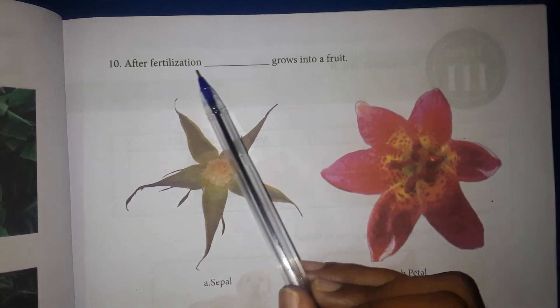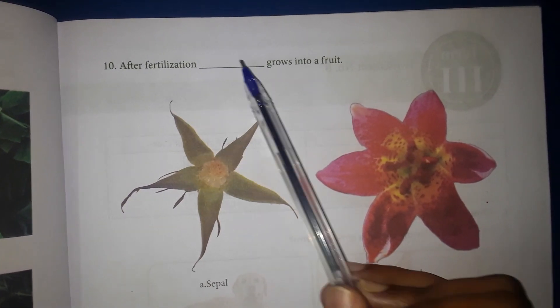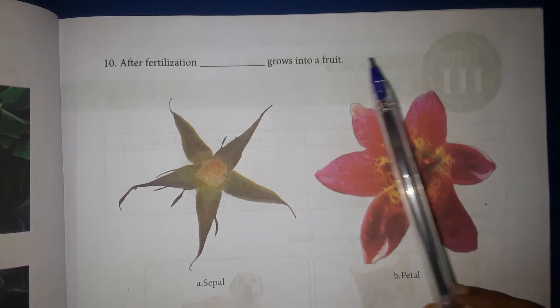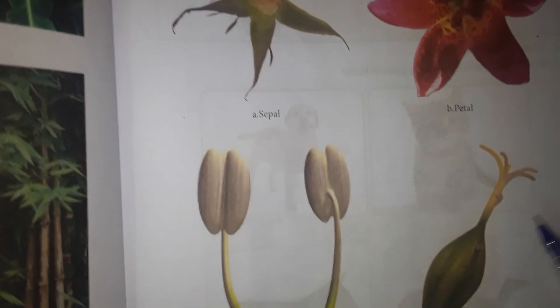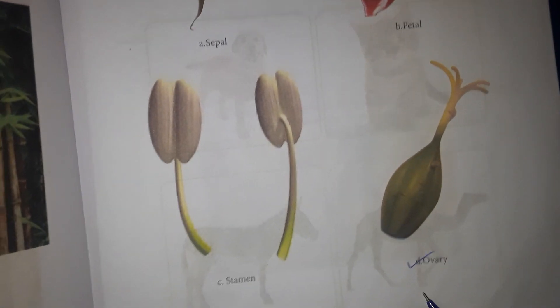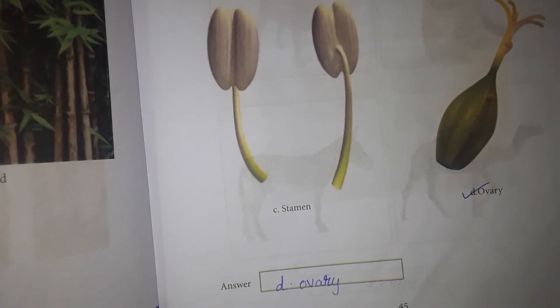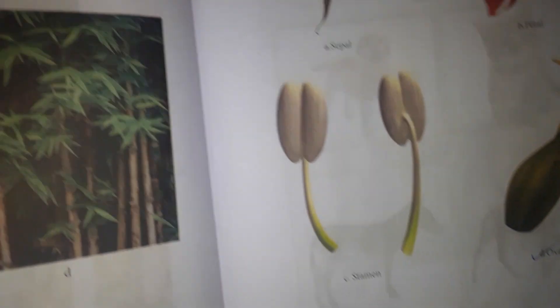Question 10: After fertilization, blank grows into a fruit. Answer option D — Ovary. This is the answer box.